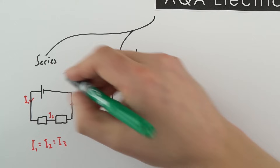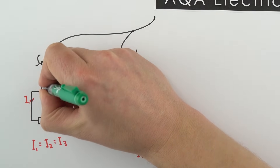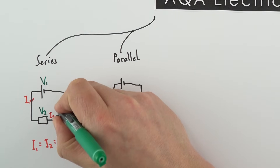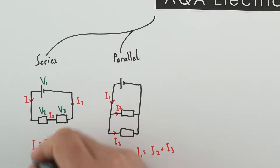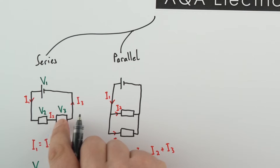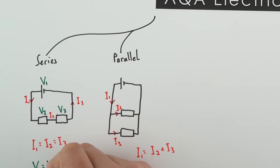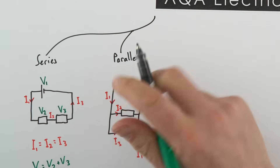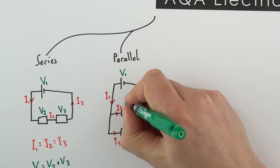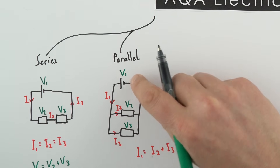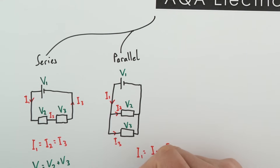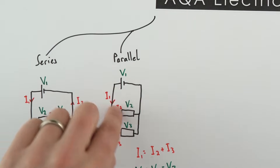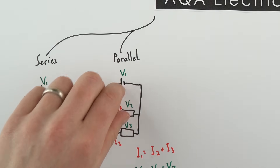Looking at potential difference in a series circuit: if V₁ is the potential difference across the cell and V₂ and V₃ are across two resistors, the potential difference is split between the components, so V₁ = V₂ + V₃. In a parallel circuit, however, the potential difference across each loop is the same: V₁ = V₂ = V₃. So the potential difference around any loop in a parallel circuit is equal.